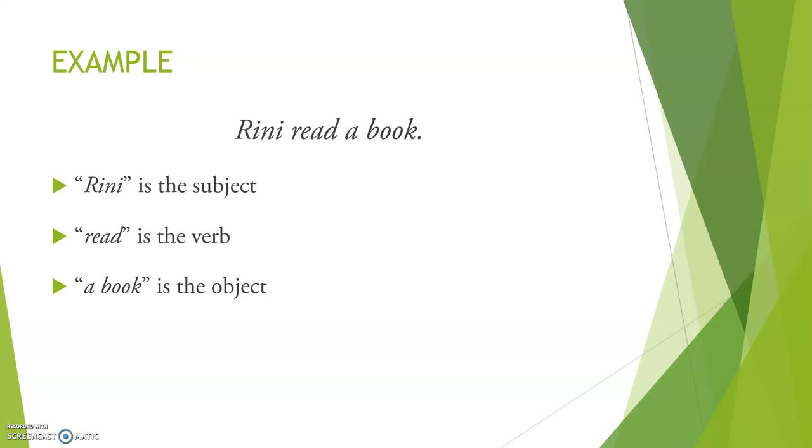In the sentence, Rini read a book. What is the object? A book becomes the object because the activity that Rini is doing is acted on a book. So a book is the object in this sentence.